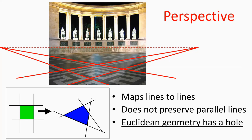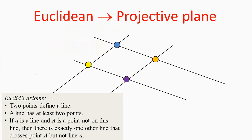To formally attack this problem, we have to switch geometries and deal with a geometry where there are no parallel lines at all — this is projective geometry. Recall that geometries are defined by axioms. The three important axioms of Euclidean geometry are: two points define a line; a line has at least two points; and the parallel axiom — if we have a line and a point not on that line, there is exactly one other line that doesn't cross the original line but goes through the given point. This parallel axiom introduces parallelism.